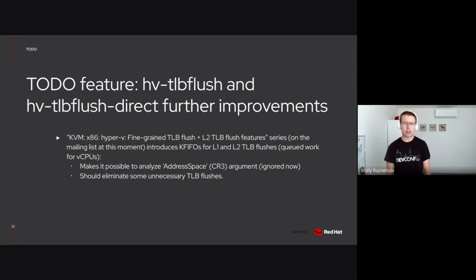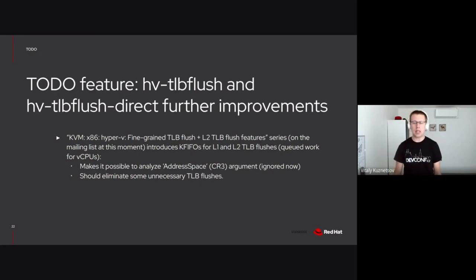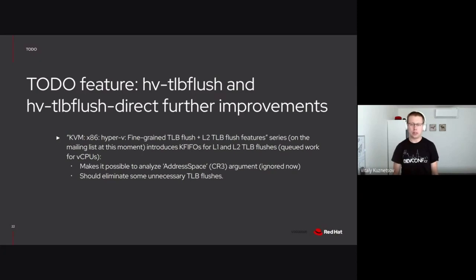More TLB flush and direct TLB flush improvements. With the series currently on the mailing list, we've started analyzing the guest virtual address argument of the hypercalls. There is one more parameter: a so-called address space or CR3 of the target vCPU. Normally it matches, but sometimes when the request is queued, the target vCPU switches from one task to another. So flushing the TLB there, when it actually comes to processing the request, is redundant. It should be fairly easy to add this parameter, save it, and analyze it on the target vCPU when we get to processing the request. This should eliminate some unneeded TLB flushes.